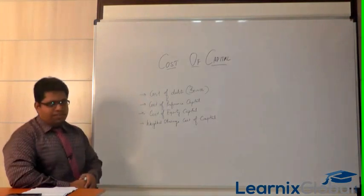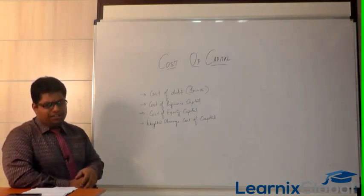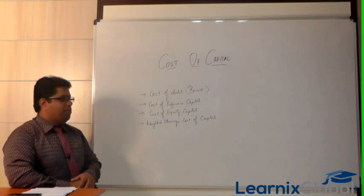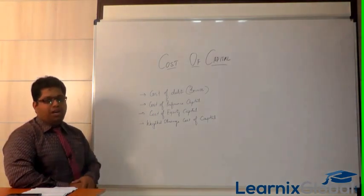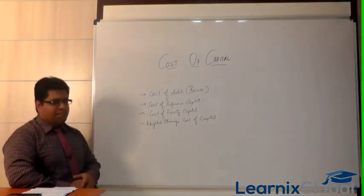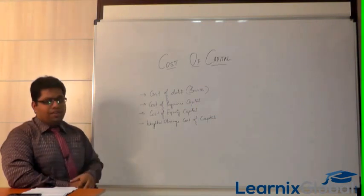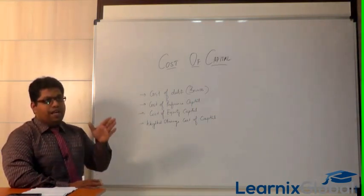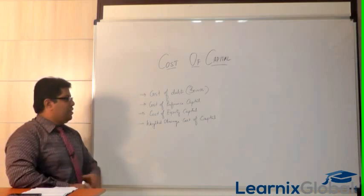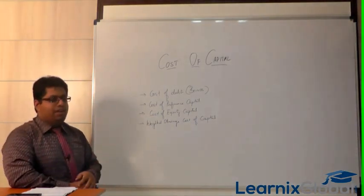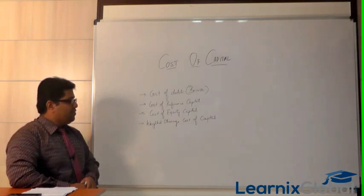For bonds, there is a tax condition which brings the cost down. Bonds have two types of calculation: cost of bonds with maturity period and without maturity period. For preference capital, we also have a tax condition. For irredeemable preference shares, the maturity period is known. For equity capital, the calculation is based on the market price of the share.